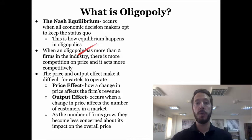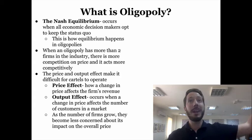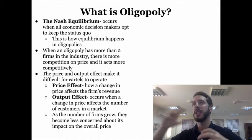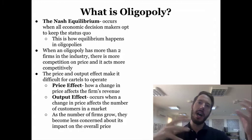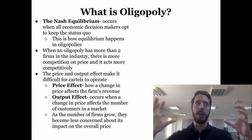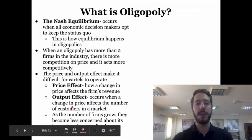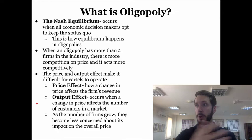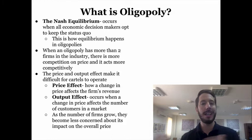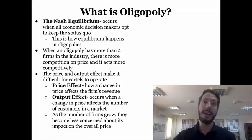When an oligopoly has more than two firms in the industry, there is more competition on price and the market becomes more competitive. You can compare cell phone companies in different countries — if you have two, there's not a lot of options, whereas some countries have four, five, or six. The more firms you have in an oligopoly, the more competition there will be on price, and the price and output effects make it difficult for cartels to operate. A price effect is how a change in price affects the firm's revenue; an output effect occurs when a change in price affects the number of customers. As the number of firms grows, they become less concerned about overall price and focus more on maintaining and growing market share.